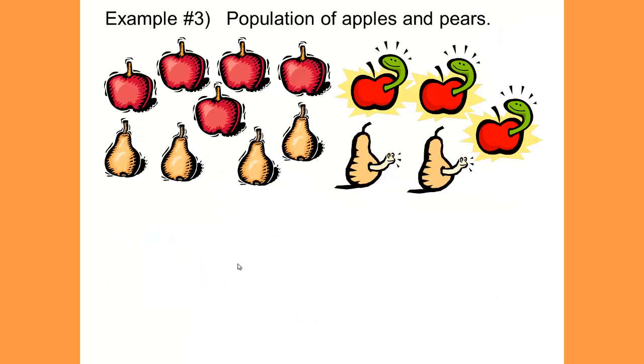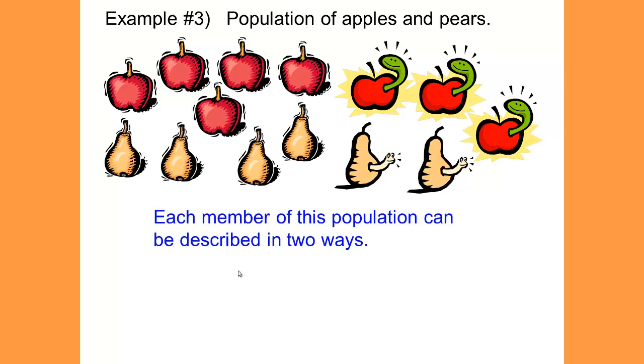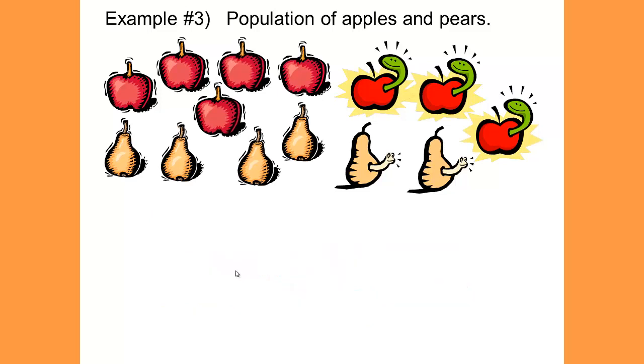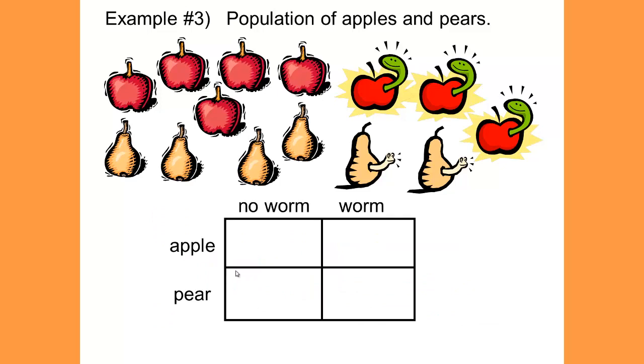Example number 3. We have a population of apples and pears. Each member of this population can be described in two ways: by the type of fruit and whether it has a worm or not. And we will make a table to organize this data. Apples and pears, worms and no worms. How many apples without a worm do we have? 5. With a worm? 3. Pears without a worm? 4. Pears with worms? 2. Add up the subtotals. 5 plus 4 is 9. 3 plus 2 is 5. 5 plus 3 is 8. 4 plus 2 is 6. And a grand total. 8 plus 6 is 14, as well as 9 plus 5 is 14. Or if we just counted the pictures at the top, we still get 14. So we have the grand total of 14.